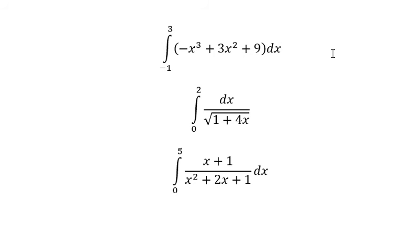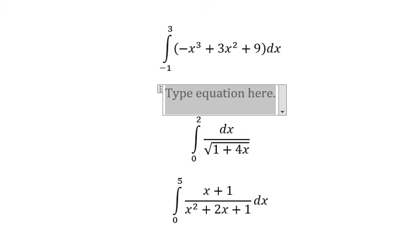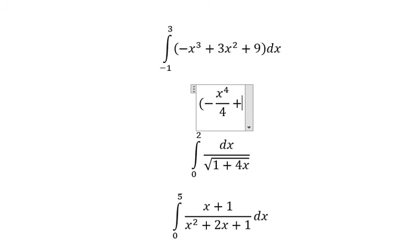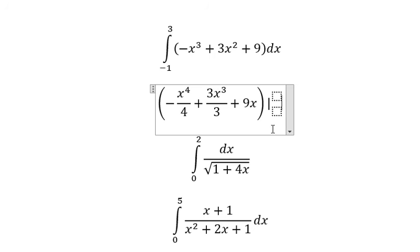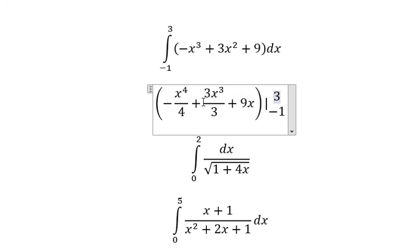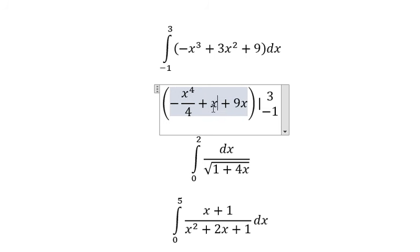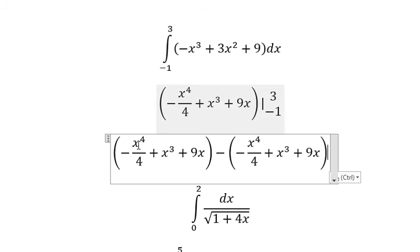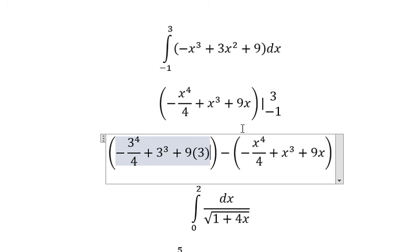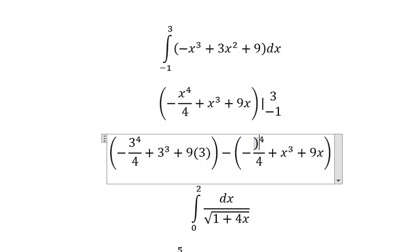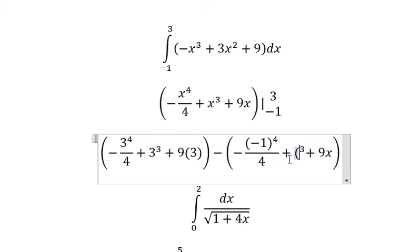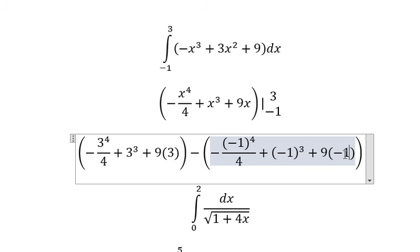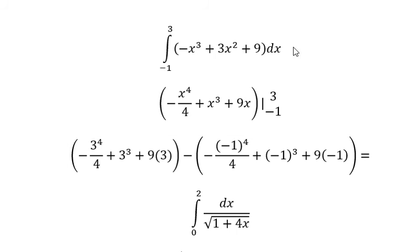Now we do similar for this one. So we simplify number 3, and we put number 3 in here and negative number 1 in here. And we got about 44.